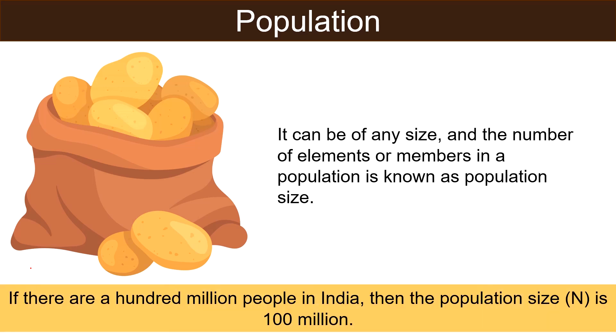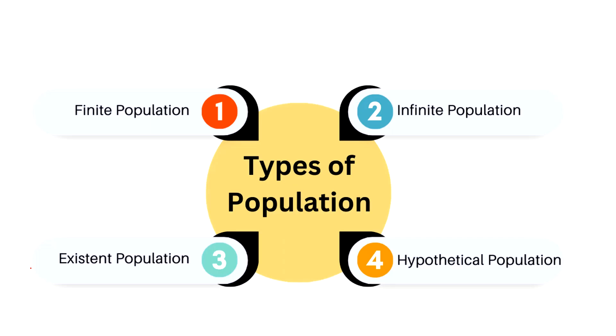That is if there are 100 million people in India then the population size is 100 million. Moving on to the types of population, there are 4 types of population: finite population, infinite population, existent population and hypothetical population.